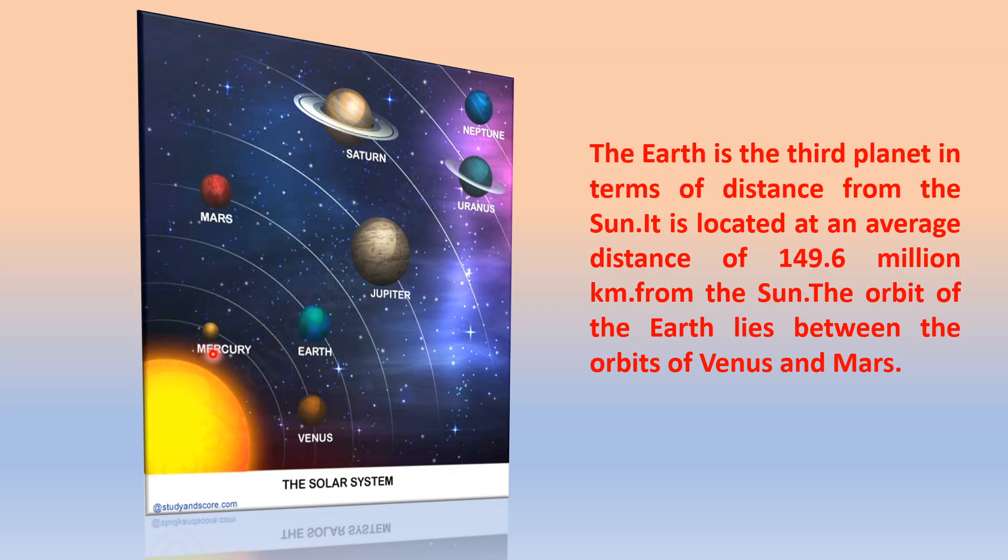The Earth is the third planet in terms of distance from the sun. It is located 149.6 million kilometers away from the sun and it lies between the orbit of Venus and Mars.